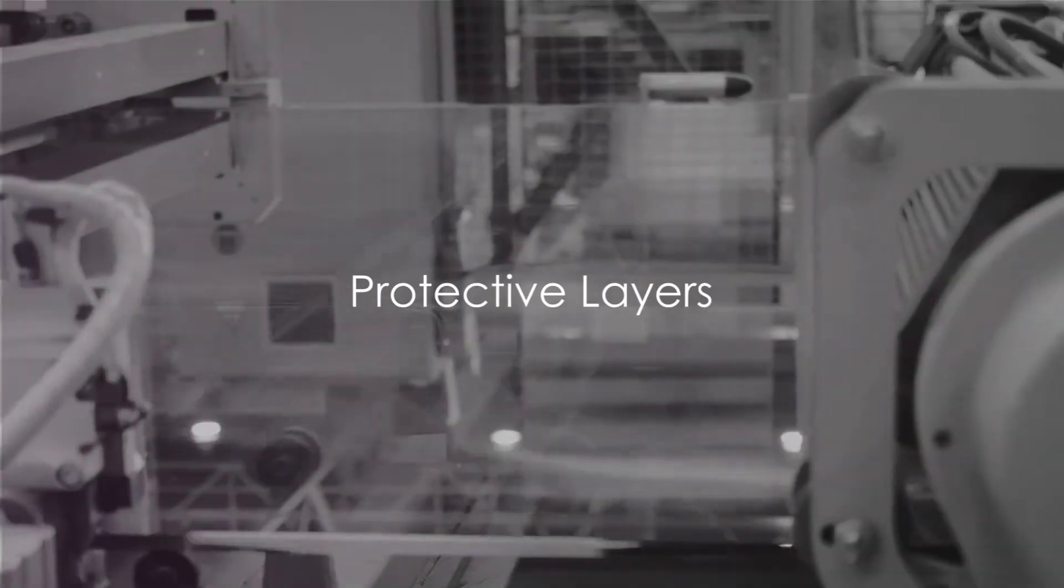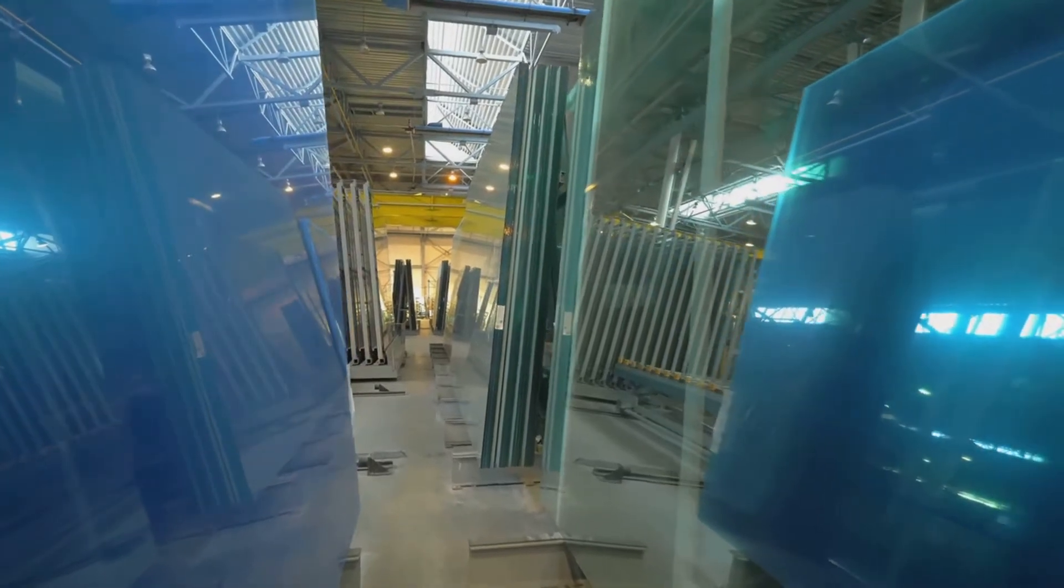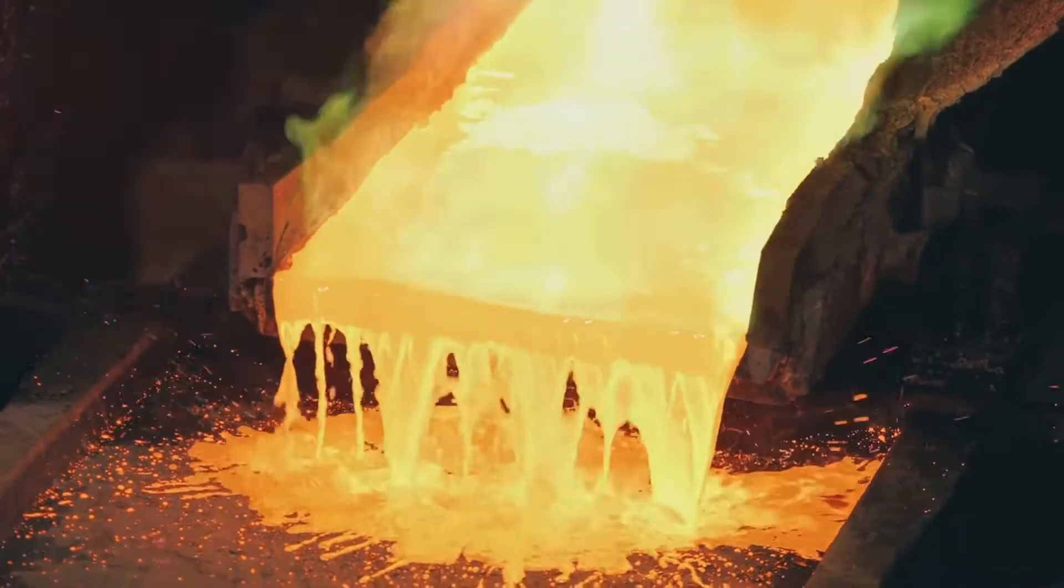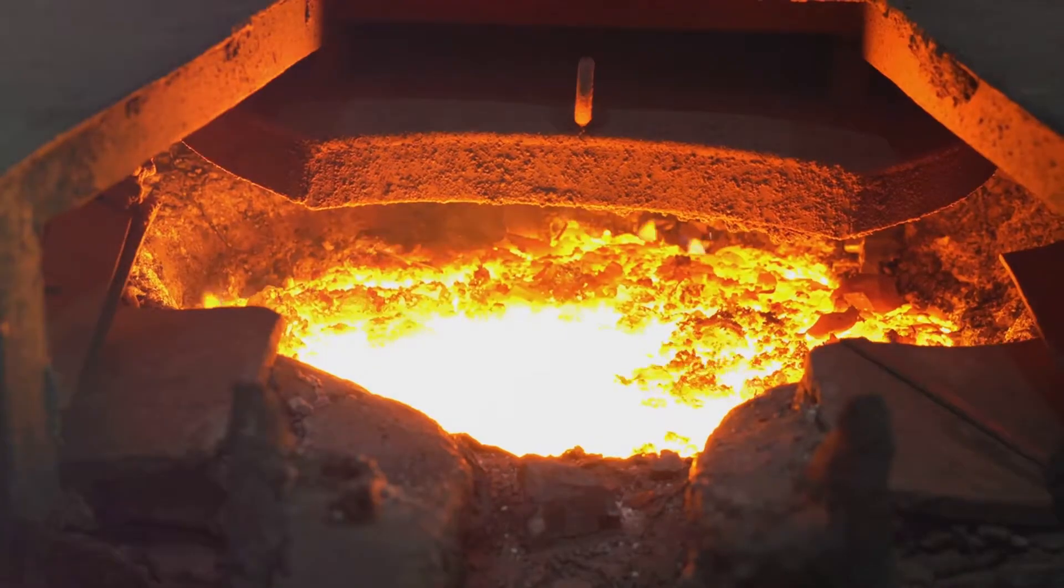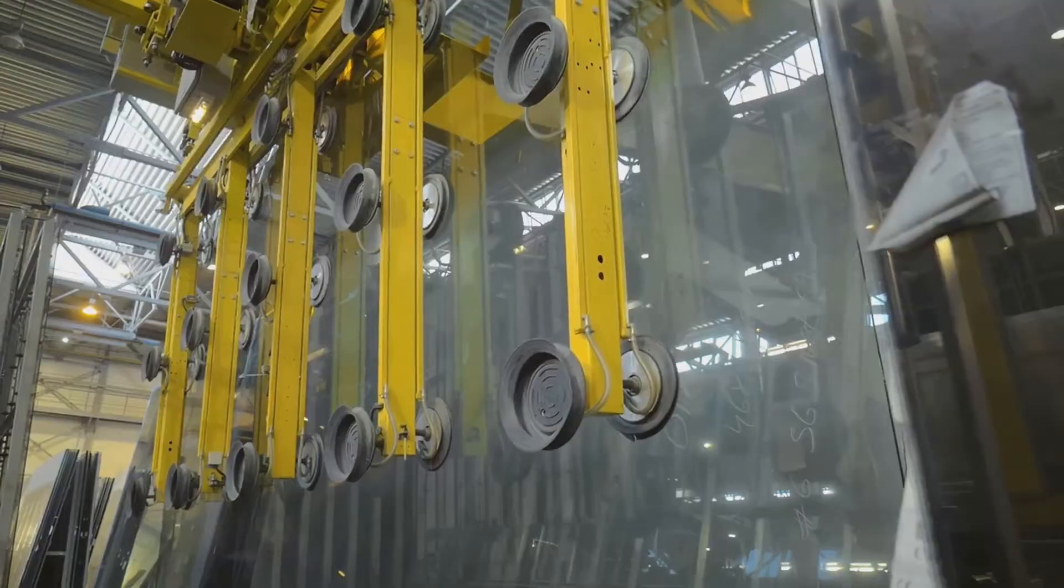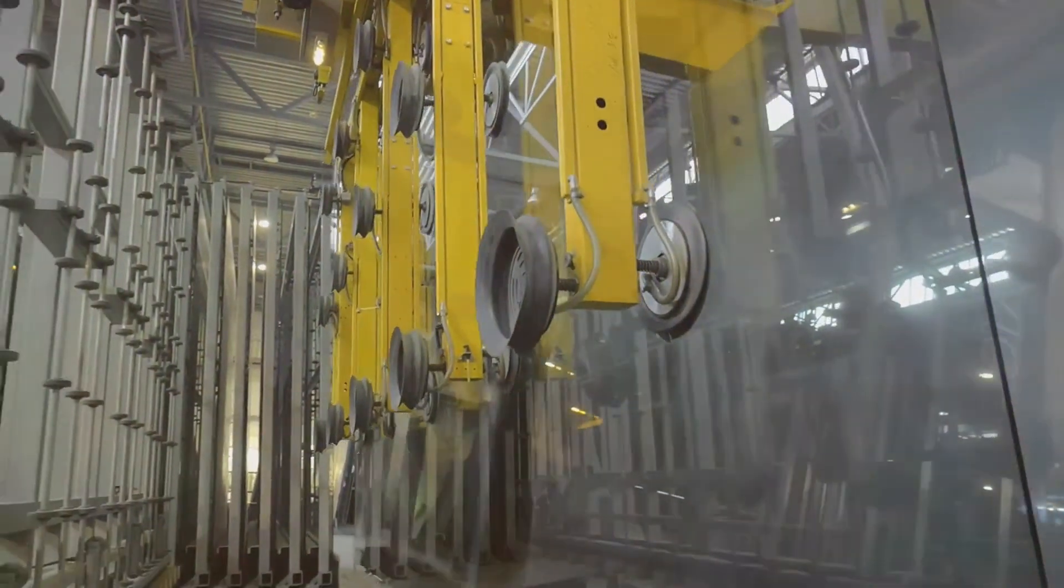Our mirror is almost complete, but it needs a little protection first. To start, we rinse off the excess silver. Then, we turn to the task of painting. Not just one, but two layers of paint are applied to shield the reflective surface. But that's not all. For extra armor, we introduce a layer of copper. This copper layer is an added barrier against corrosion and damage. But we're not quite done yet. Any excess copper is rinsed off before we put the glass to dry.